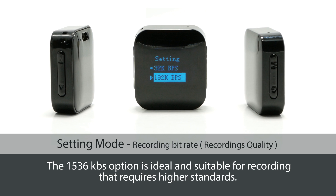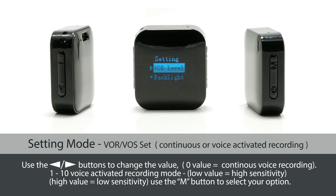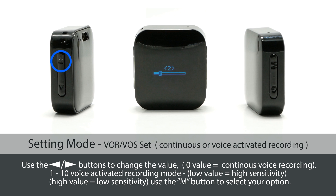The 1536 kilobits option is ideal for recordings that require higher standards. Voice Activated Recording. Use the arrow buttons to change the value. A value of 0 equals continuous voice recording. Values 1 to 10 set voice activated recording mode. A low value equals high sensitivity; a high value equals low sensitivity.